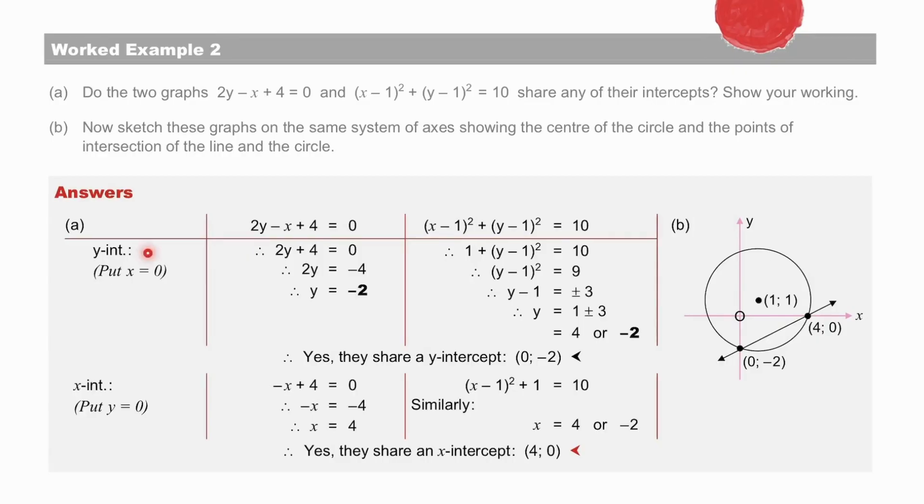To find the y-intercepts, we put x equal to 0 in both equations. And we find that the graphs share a y-intercept of 0 minus 2. To find the x-intercepts, we put y equal to 0 into both equations. And we find that they share an x-intercept of 0.